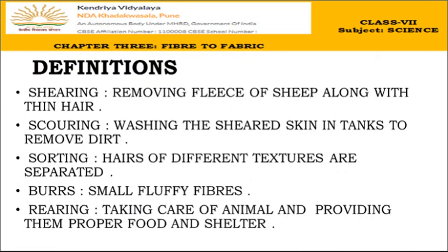Key definitions: Shearing — removal of the fleece along with thin skin from the animal's body. Scouring — washing of the sheared skin and hairs in a tank to remove dirt. Sorting — separating hairs of different textures, such as long and short hairs. Burs — small fluffy fibers rolled into ball-like structures. Rearing — taking care of the animal by providing proper food and shelter.